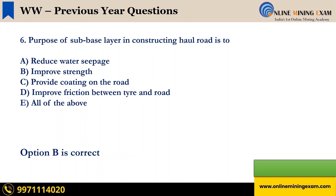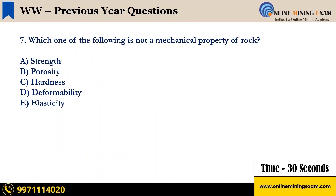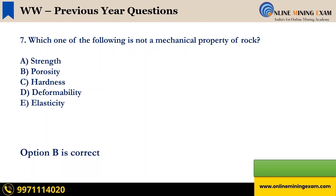Question 7: Which one of the following is not a mechanical property of rock? A — strength, B — porosity, C — hardness, D — deformability, E — elasticity. The correct answer is B — porosity. It is not a mechanical property of rock.